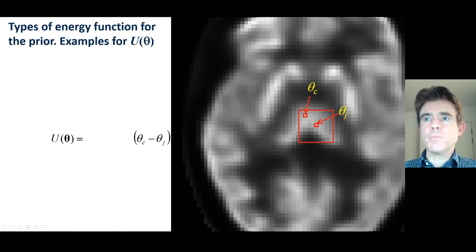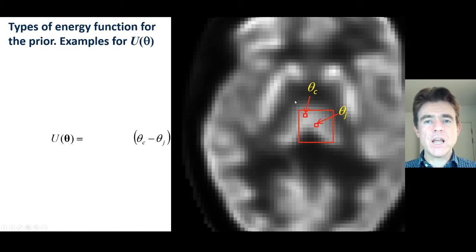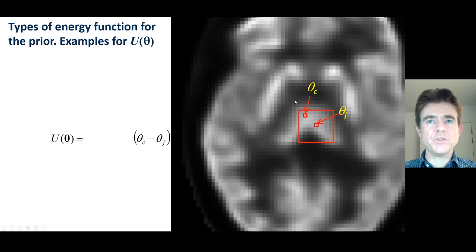We're only going to impose that if they are a certain distance from each other, because if they're too far away, then we can allow them to be different without any concern, because they're probably in different structures.